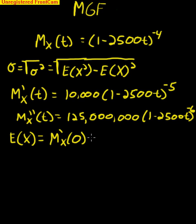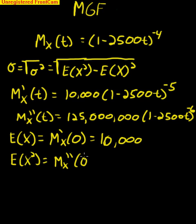In order to find our first moment, all we have to do is just take our first derivative evaluated at zero. So this is going to go to one. We're going to get 10,000. Similarly, our second moment is going to be equal to the following. We're going to get 125 million here.